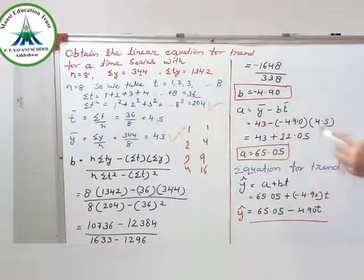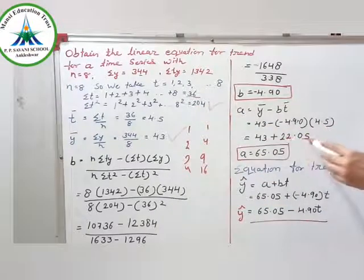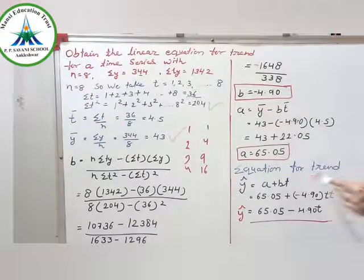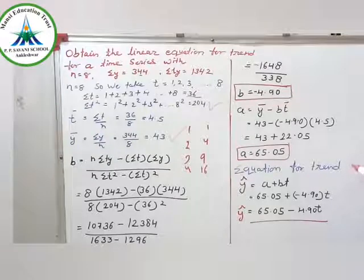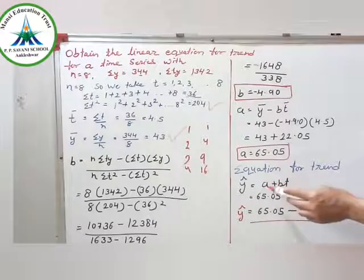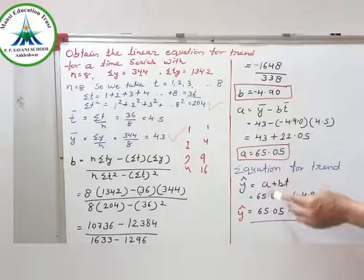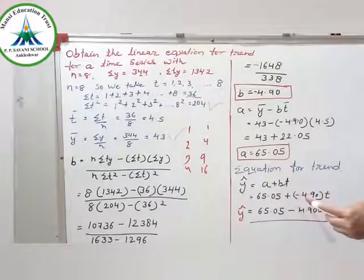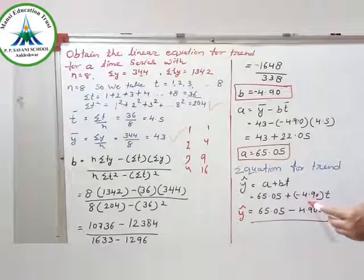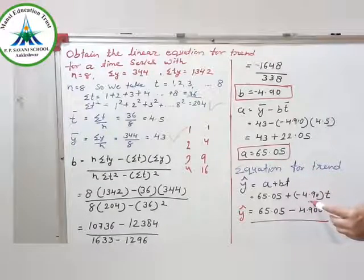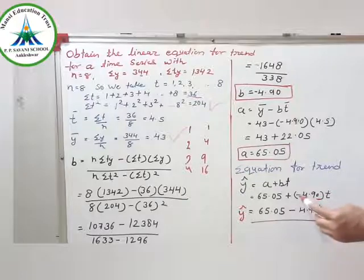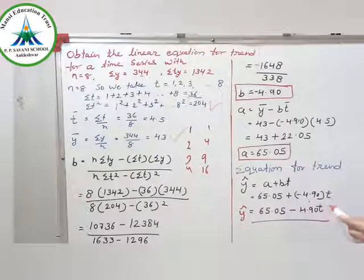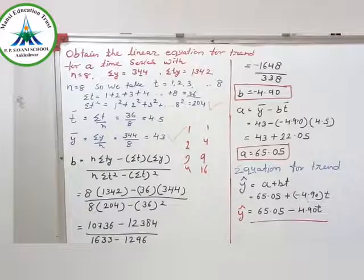So a equal to 65.05. Now what we find out is the equation for trend. Y cap equal to a plus bt. So a equal to 65.05 plus the value of b is minus 4.90, which we found out, and t. So the equation is 65.05 minus 4.90t.